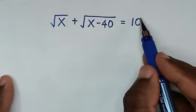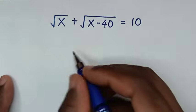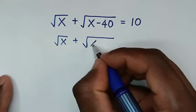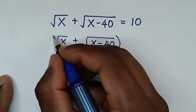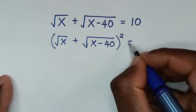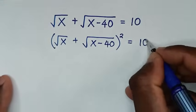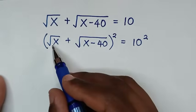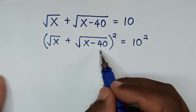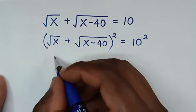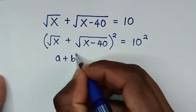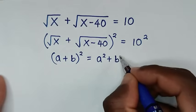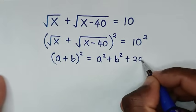In the first step we will square both sides. The left side is square root of x plus square root of x minus 40, and we square this side equal to 10 squared on the right side. The left side is in the form of (a + b) squared, which equals a squared plus b squared plus 2ab.